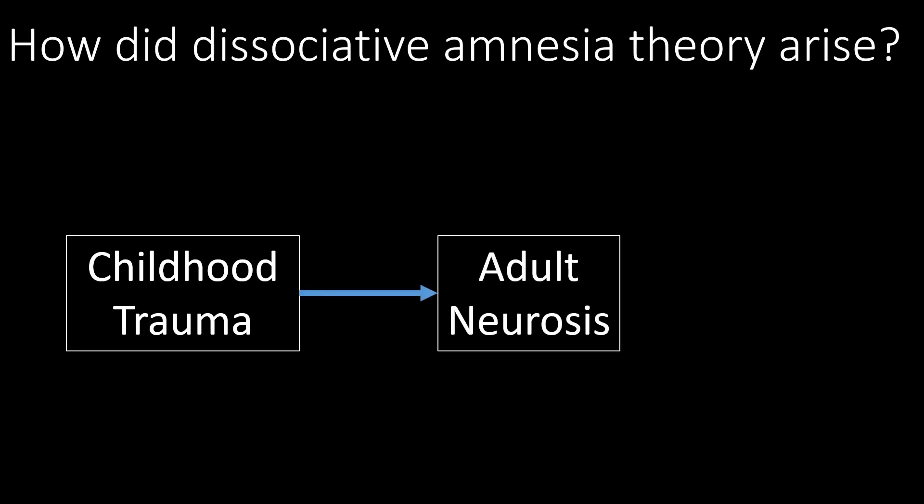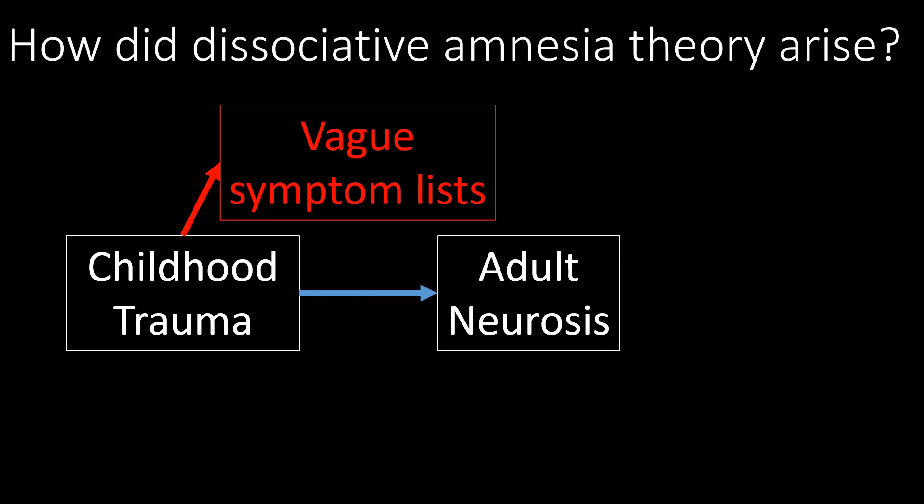Childhood trauma causes adult neurosis — it's a reasonable hypothesis. There may be a small or large relationship between the two; it's an open question. But what happens if you add the idea that vague symptom lists equate to adult neurosis? That makes it very easy to always find a connection, by making adult neurosis so broad that everybody could find themselves in vague symptom lists.